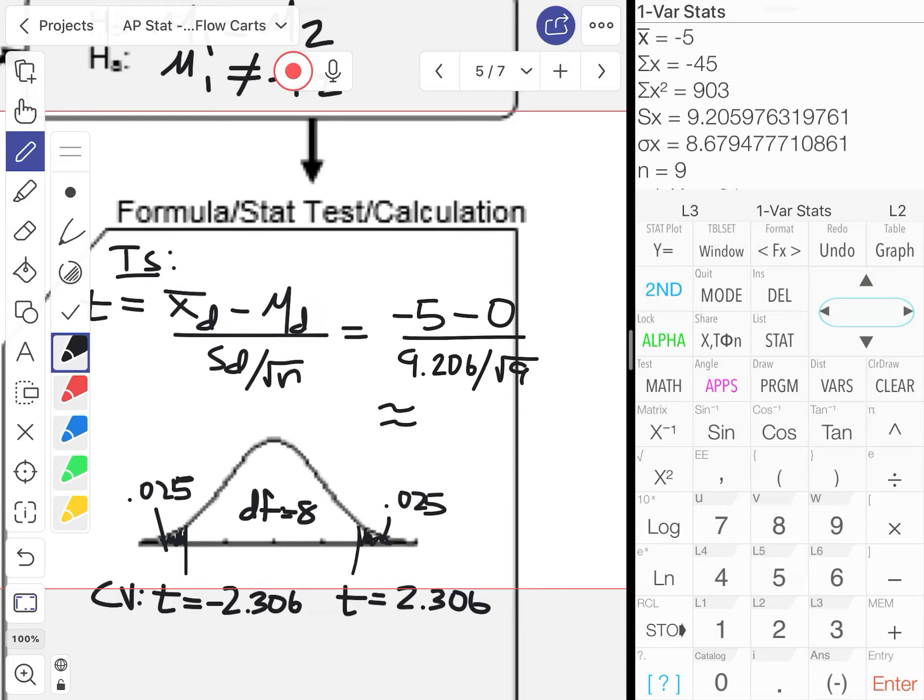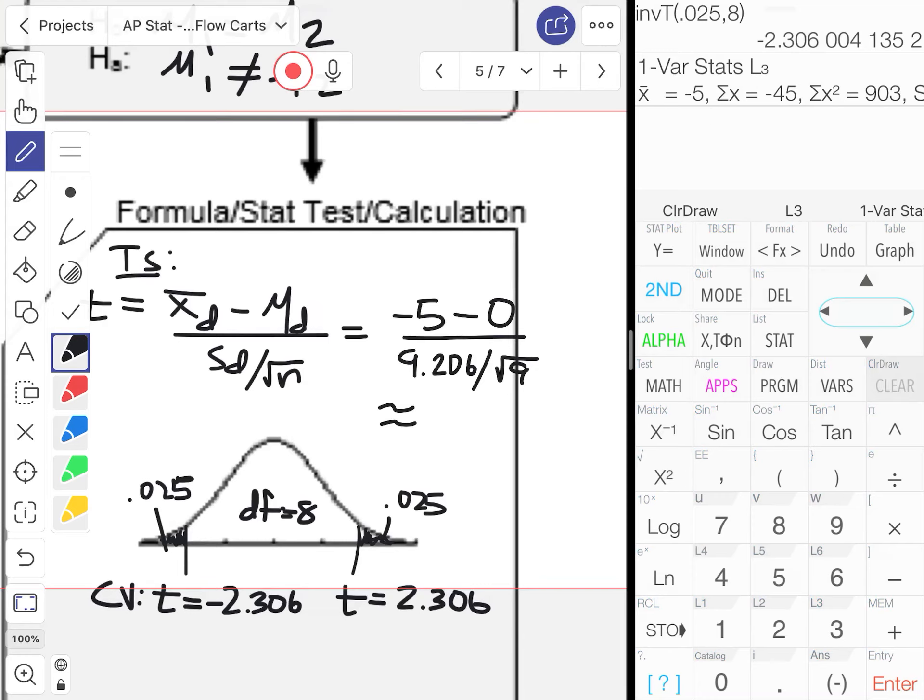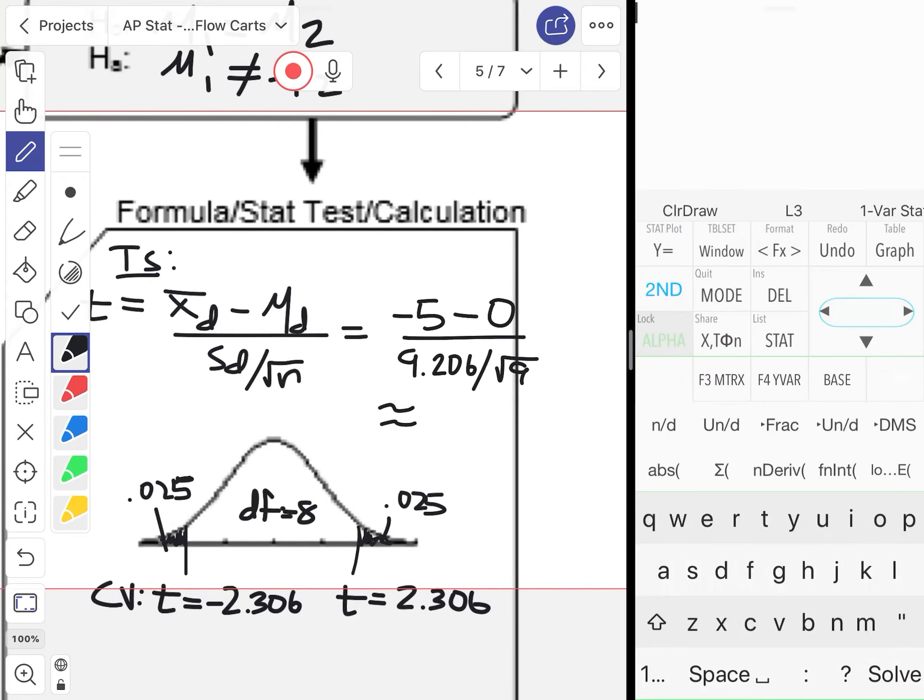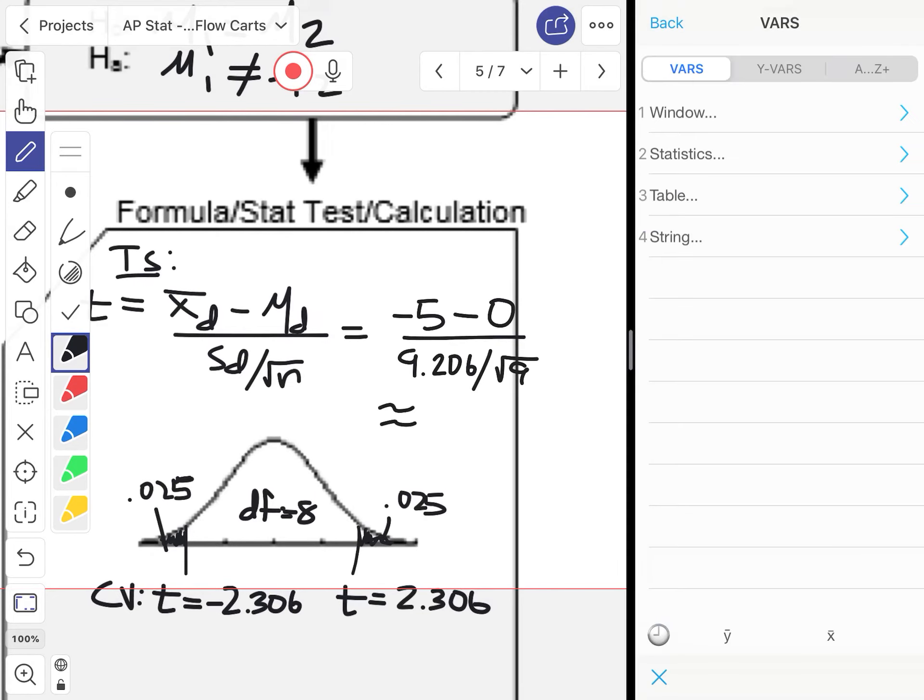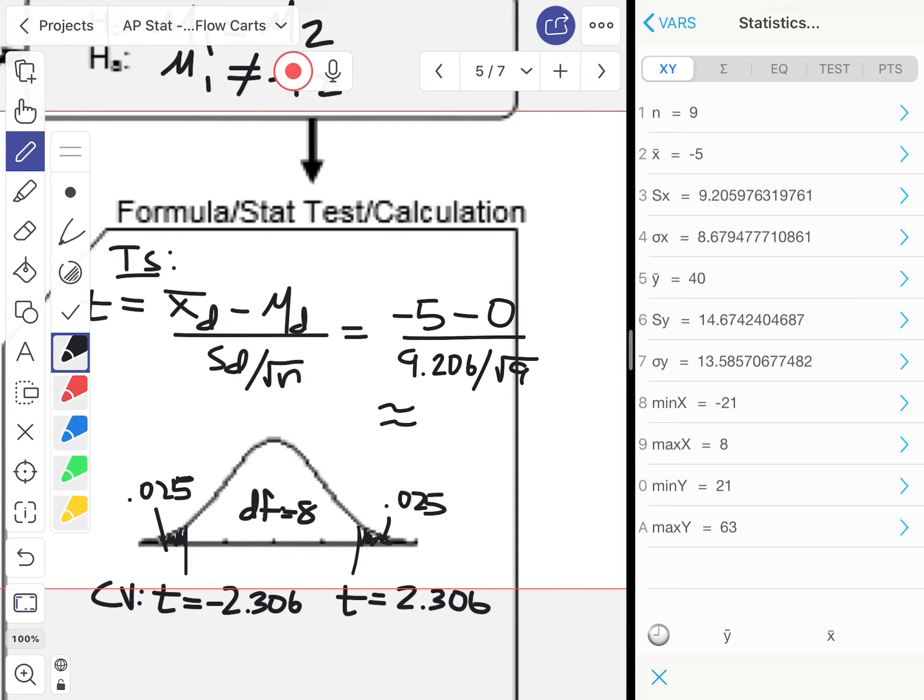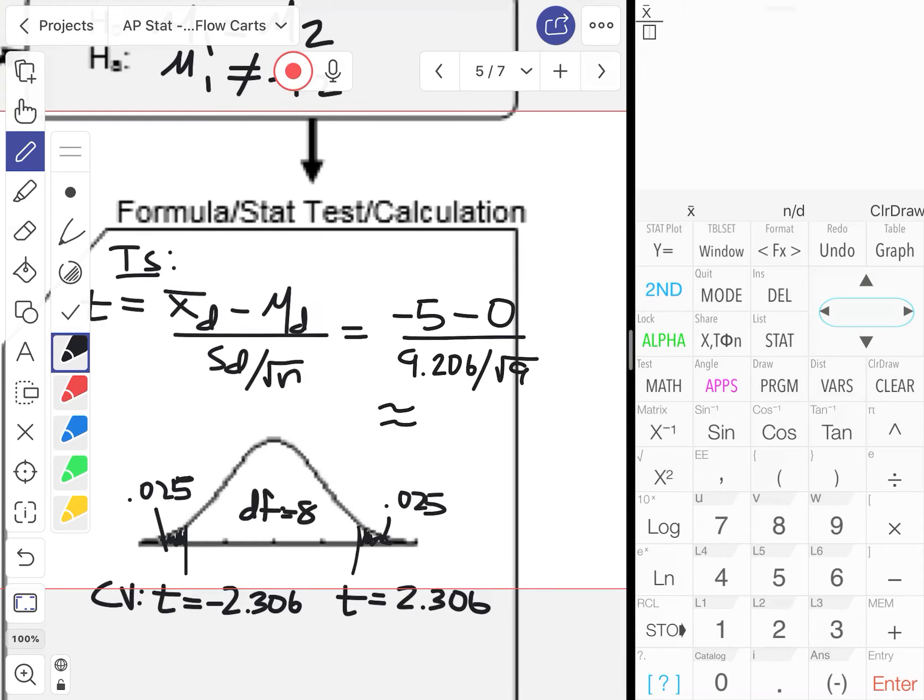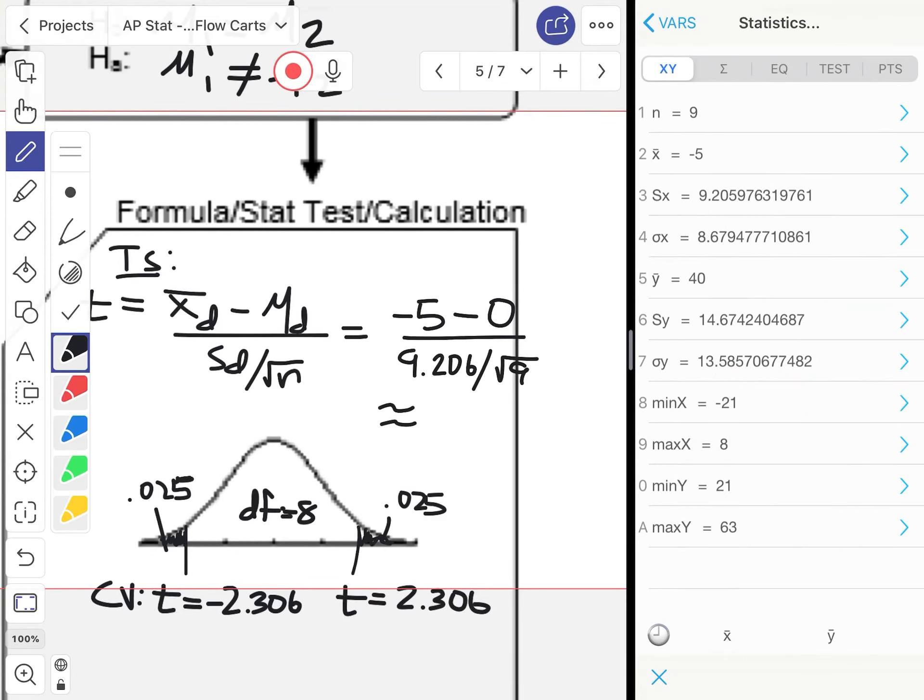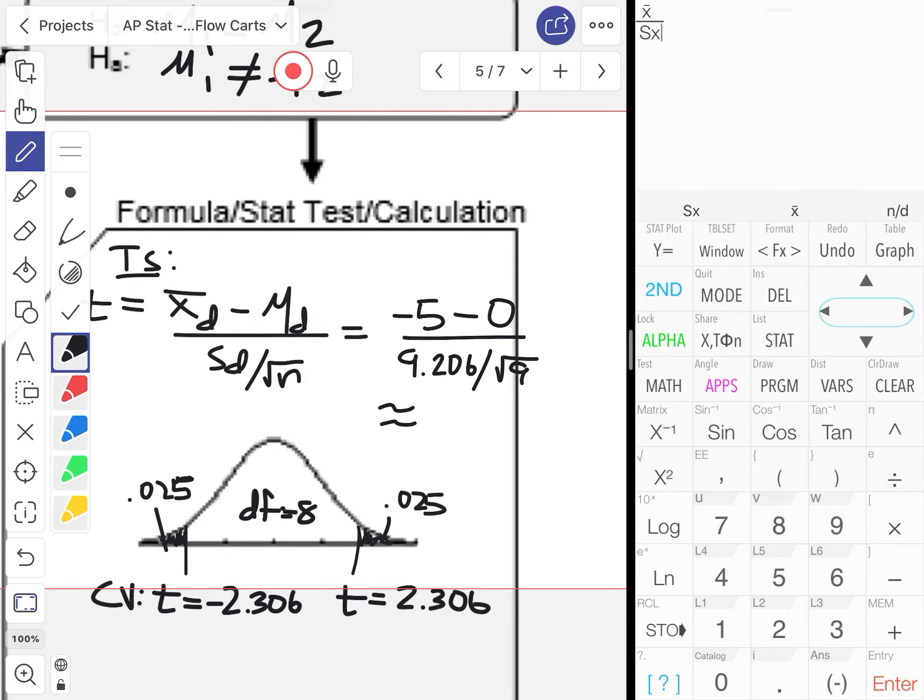All right, so we'll get an approximate value here, but I'm going to use, like we always do, the true values that are stored in the calculator instead of just roughing it out here. Use my fractional tool bars again, it's option five in the vars menu for statistics. x̄, I don't need minus anything because it's just zero, divided by vars option five s_x. I could just square root of nine—the number of pairs is nine, so square root of nine is three, so I'll just type in divided by three. So we're looking at approximately negative 1.629.